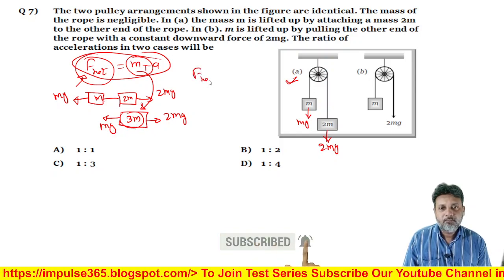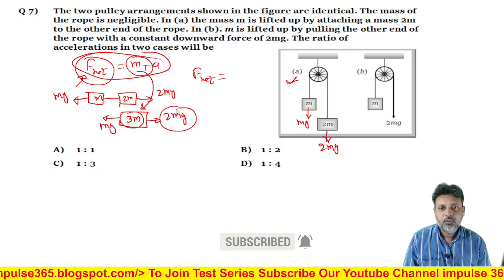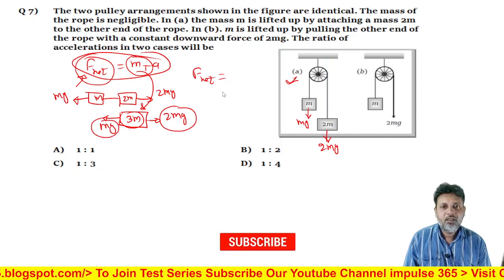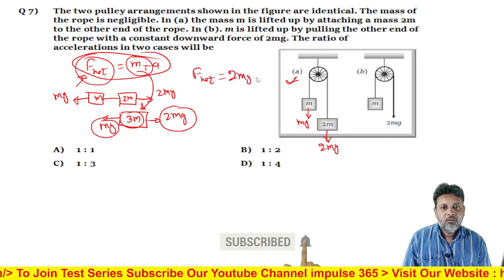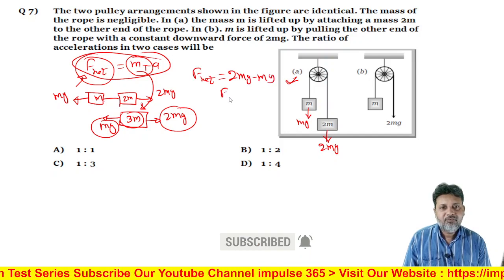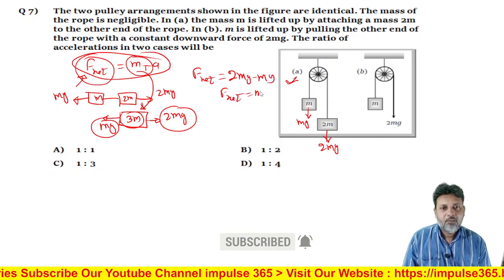Aur F_net ki value kya hui, F_net ki value hi, idhar 2MG, idhar MG, to dono ka resultant kitna hoga, MG. Yani 2MG minus MG, yeh aajayega, F_net ki value, MG ke equal.